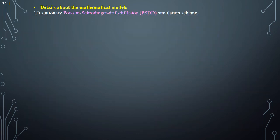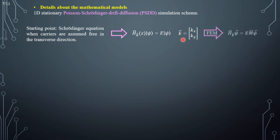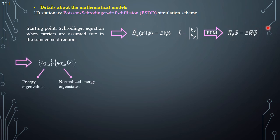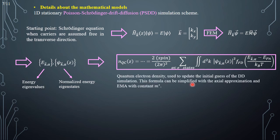From a mathematical standpoint, the starting point is the Schrödinger equation when carriers are assumed to be free in the transverse direction. H represents the Hamiltonian, which can either be the effective mass Hamiltonian or a more complicated k·p Hamiltonian, while k represents the two-dimensional transverse wave vector. By applying the finite element method, it is possible to transform this equation into a generalized eigenvalue problem, providing the energy eigenvalues and the normalized energy eigenstates. From these, the quantum corrected electron density is derived by summing the modulus squared of the wave functions over all states, considering Fermi-Dirac statistics. This formula can be simplified using the actual approximation and the effective mass approximation with a constant effective mass.